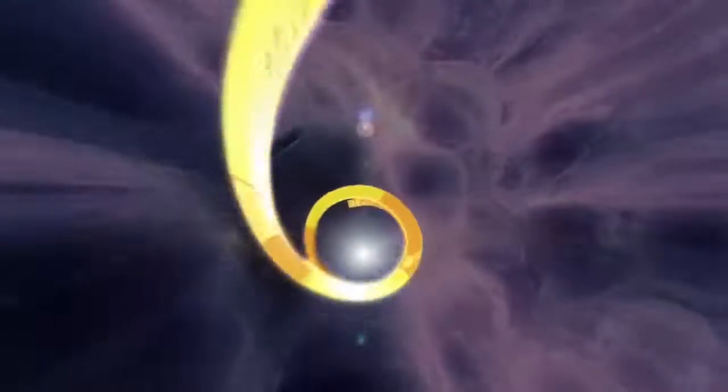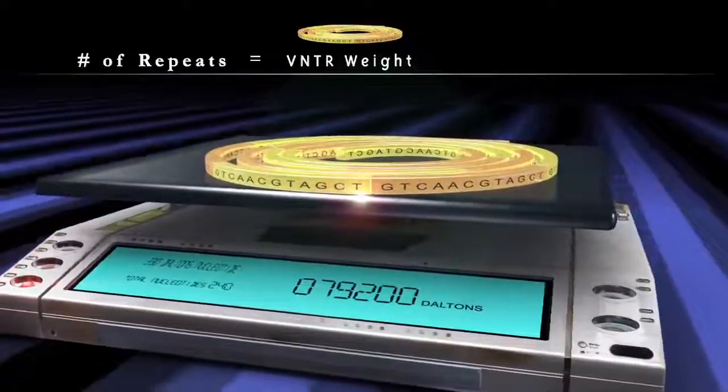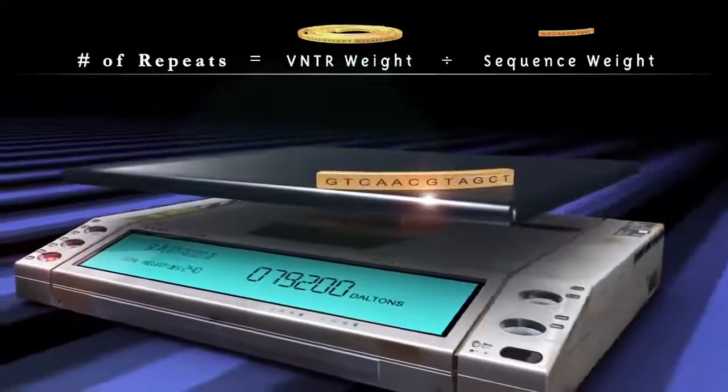The number of repeats can be gauged by dividing the entire molecular weight of a given VNTR by the molecular weight of the repeated sequence.